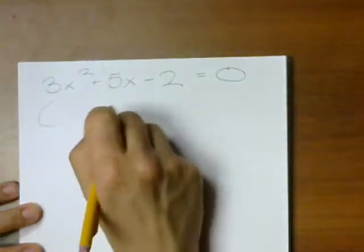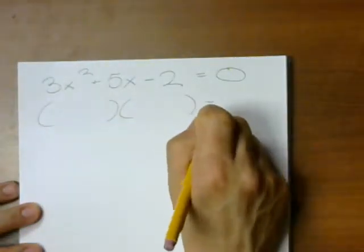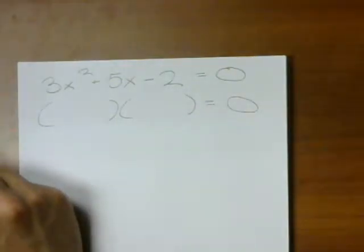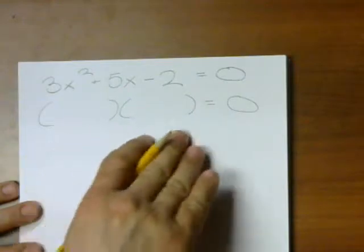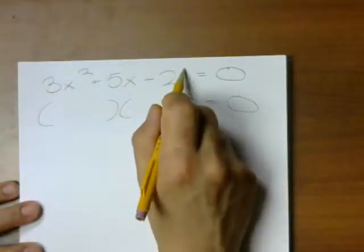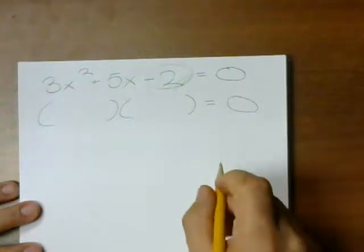Okay, so I want to factor this without using any formula at all, so what am I going to need to do? Well, I want to express this as two binomials, and what we've been doing in the past is looking at the constant term and saying,